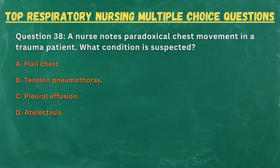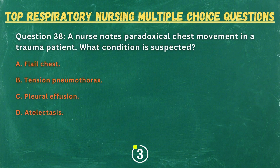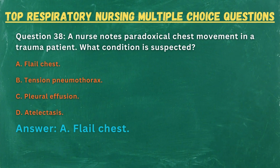Question 38. A nurse notes paradoxical chest movement in a trauma patient. What condition is suspected? A. Flail chest. B. Tension pneumothorax. C. Pleural effusion. D. Atelectasis. Answer: A. Flail chest.